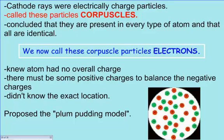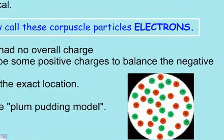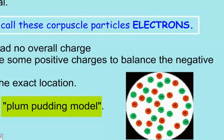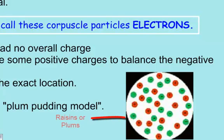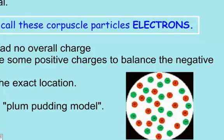He concluded that there must be some positive charges to balance all the negative charges — that's why there was no overall charge. He didn't know the exact location of all these charges. He proposed the plum pudding model. It's kind of like oatmeal with raisins: the oatmeal represents all the positive charges, and the raisins are the negative charges. He said that the negatives were sitting in a sea of positive.